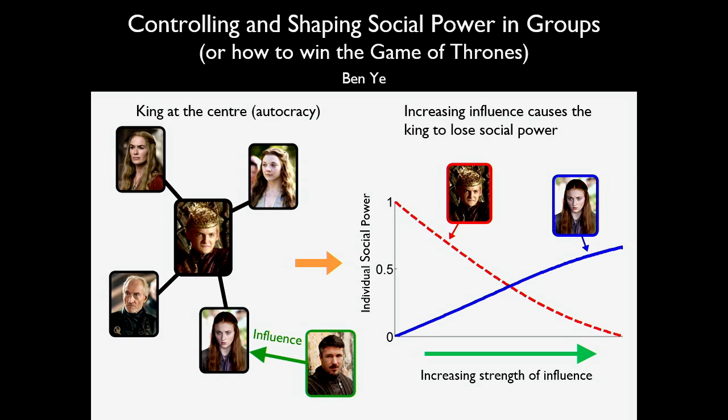In the example behind me, King Joffrey, the handsome man in the middle, has by far the most social power. If he claims in a discussion that he's the greatest king in the history of Westeros, unless you want to be shot with a crossbow, you'd have to agree.